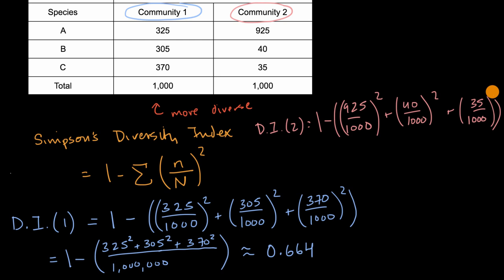And if we simplify in a similar way, that's going to be equal to 1 minus all these 1,000 squared, that's just a million, and that's a common denominator. And so you're going to have 925 squared, plus 40 squared, plus 35 squared.